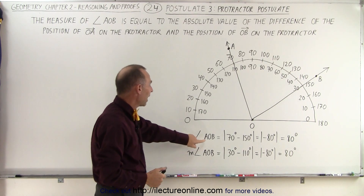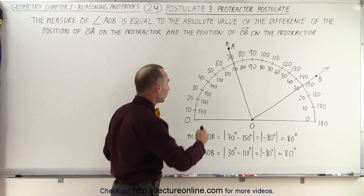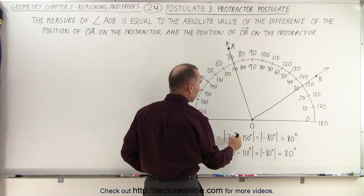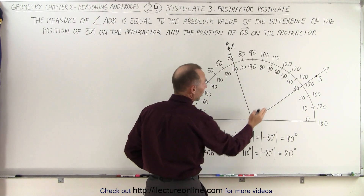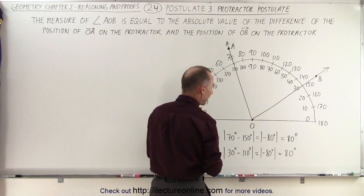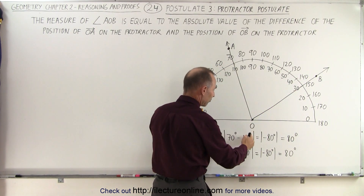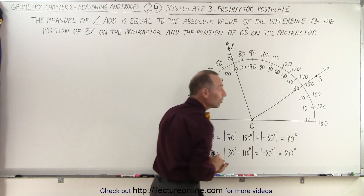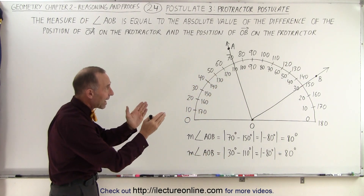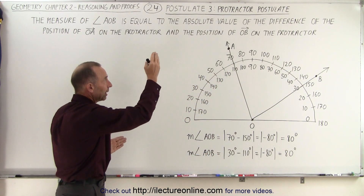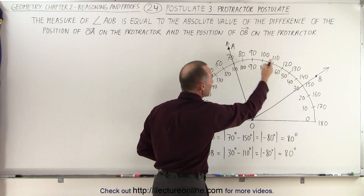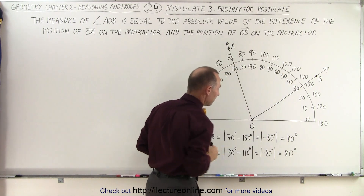The measure of angle AOB started from the left: we take 70 degrees, we subtract from that 150 degrees, we take the absolute value of that — that's the absolute value of minus 80 degrees — which is indeed 80 degrees. And that's the measure of the angle between ray OA and ray OB, or the angle AOB.